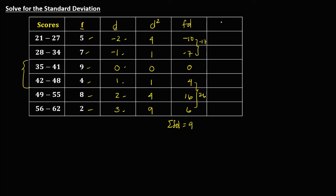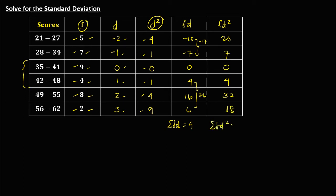For the last column, find FD squared by multiplying F and D². So: 5 times 4 is 20, 7 times 1 is 7, 9 times 0 is 0, 4 times 1 is 4, 8 times 4 is 32, and 2 times 9 is 18. The summation of FD²: 20 plus 7 is 27, and 4 plus 32 plus 18 is 54. So 27 plus 54 gives ΣFD² = 81.